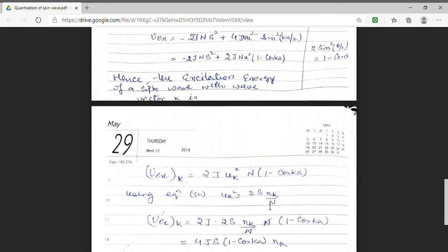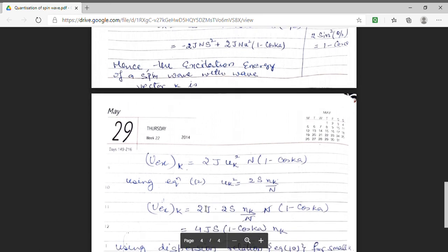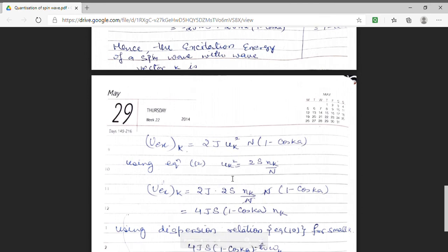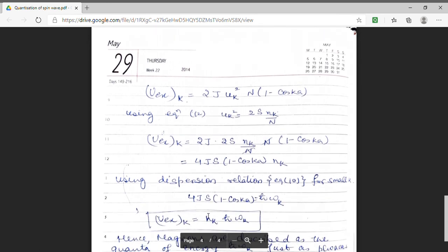So substituting the value of uk square, I get the excitation energy of a spin wave which has a wave vector k. It comes to be 2j multiplied by 2s nk upon capital N multiplied by a factor of 1 minus cos Ka. My excitation energy is 4js 1 minus cos Ka multiplied by nk.